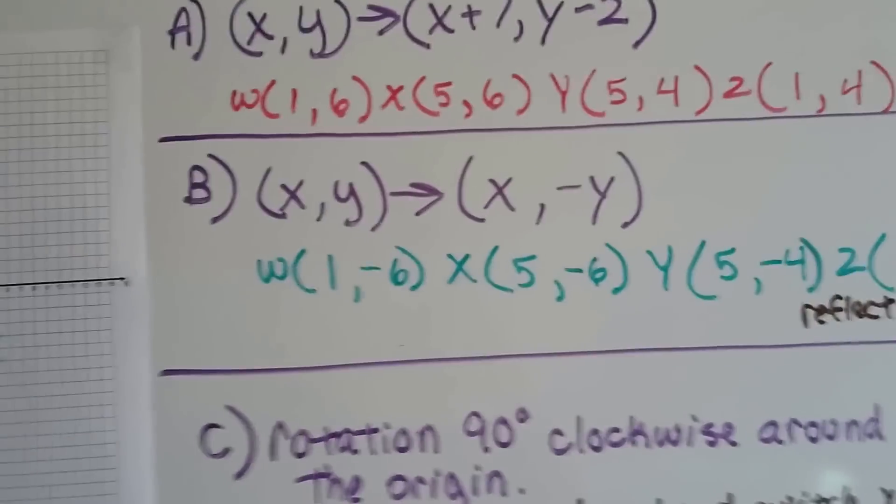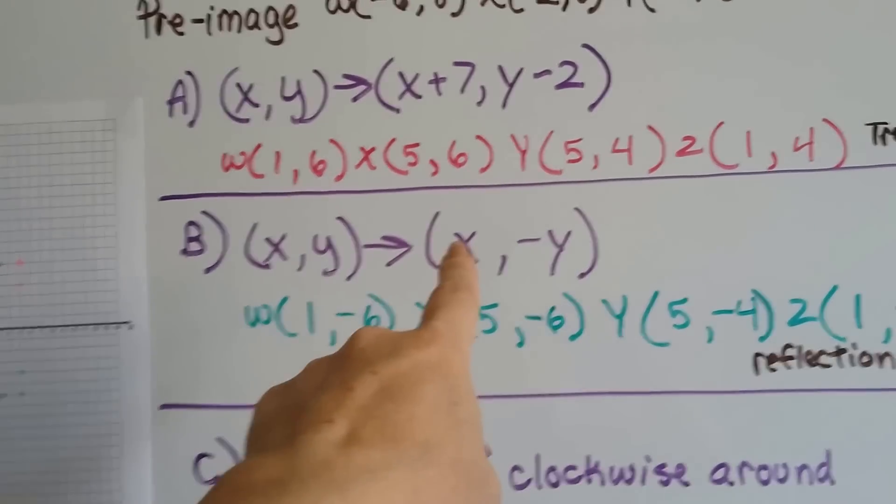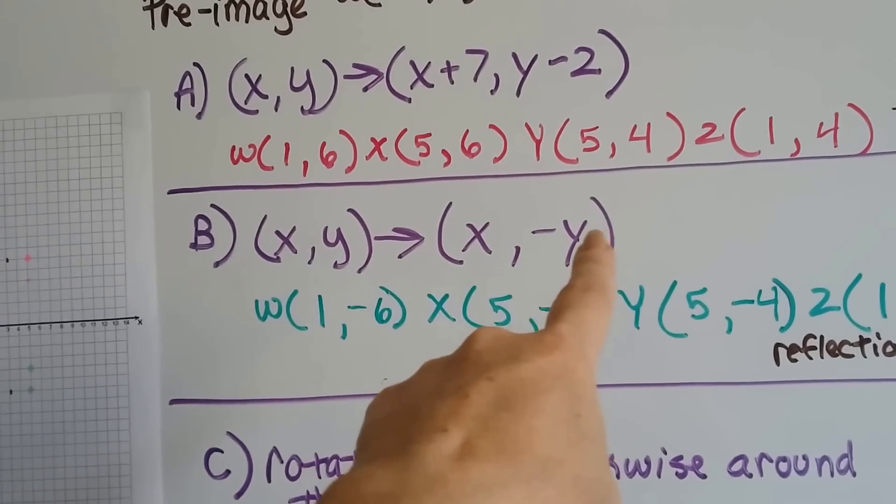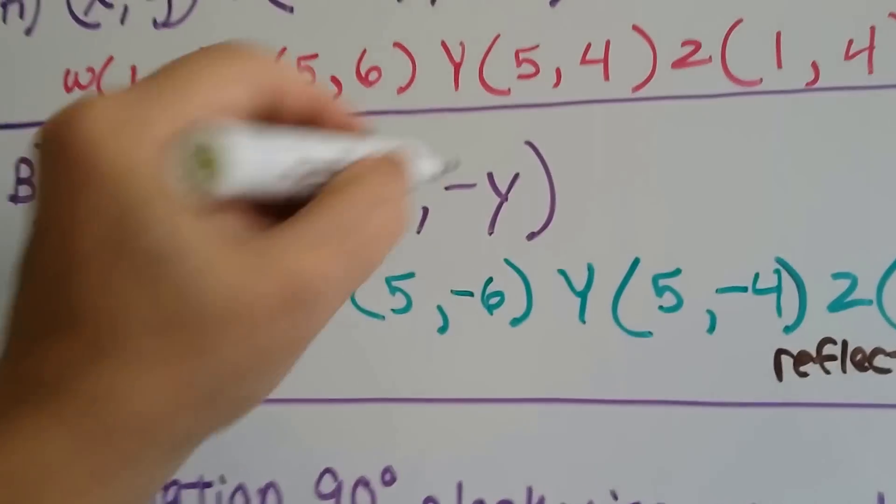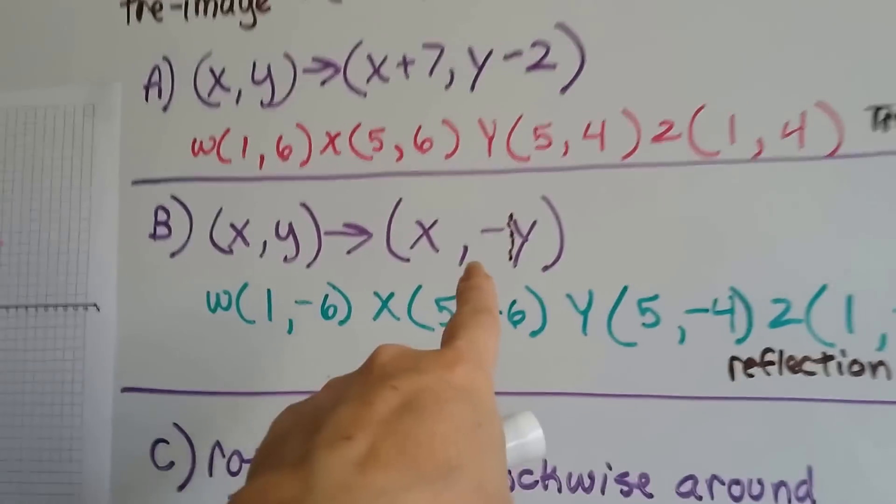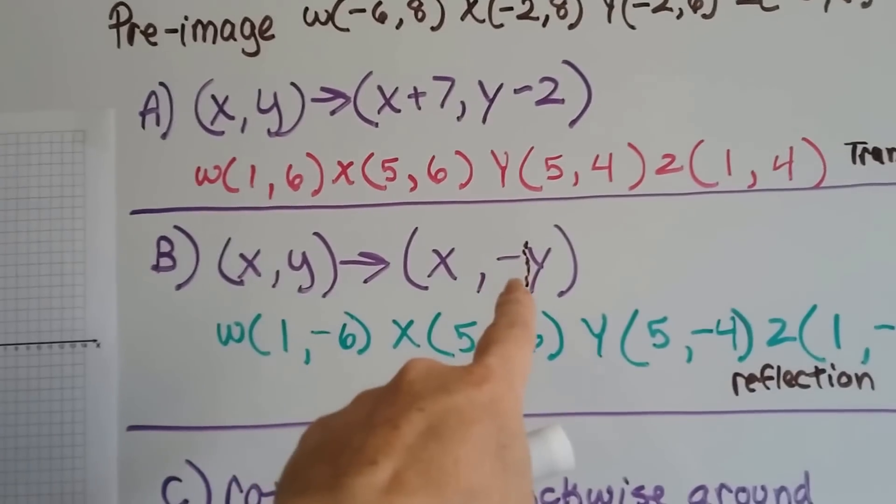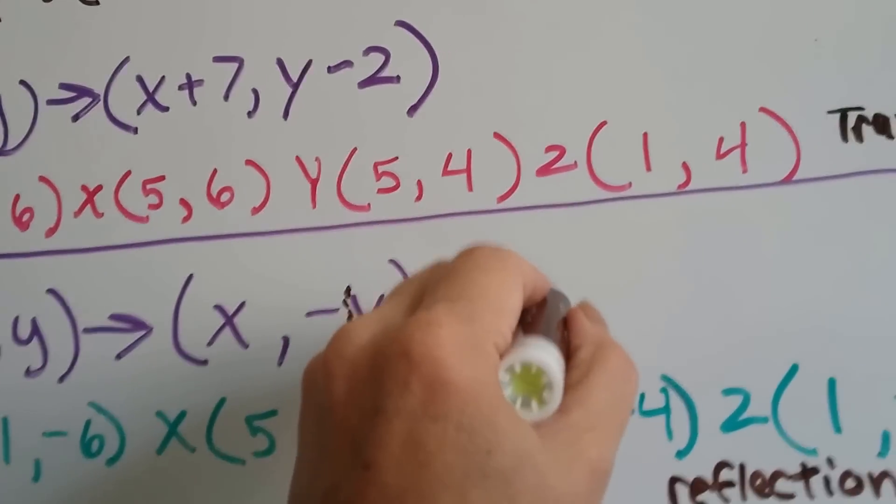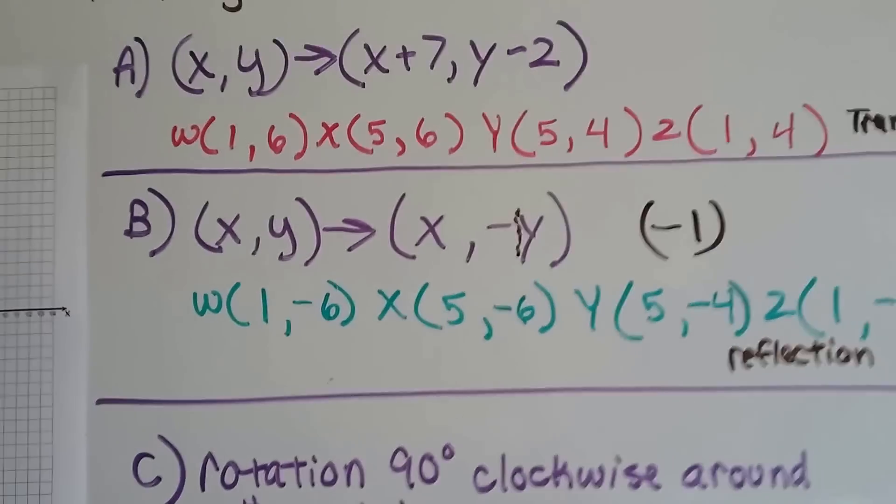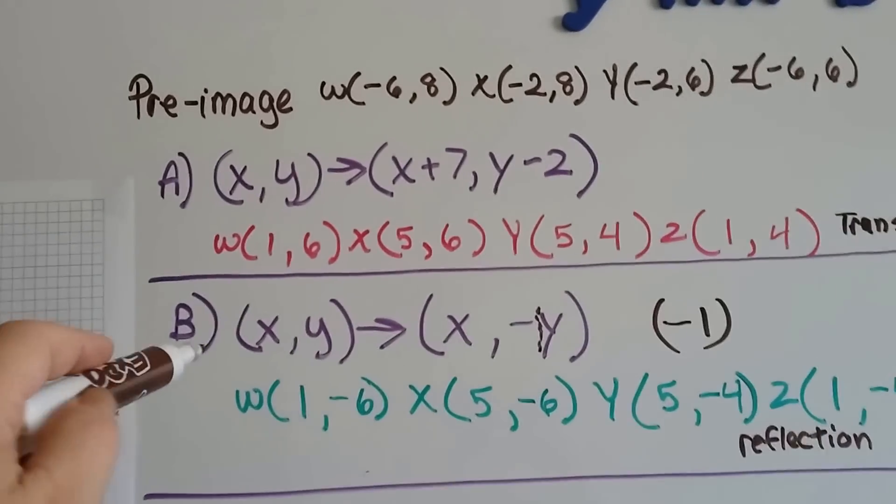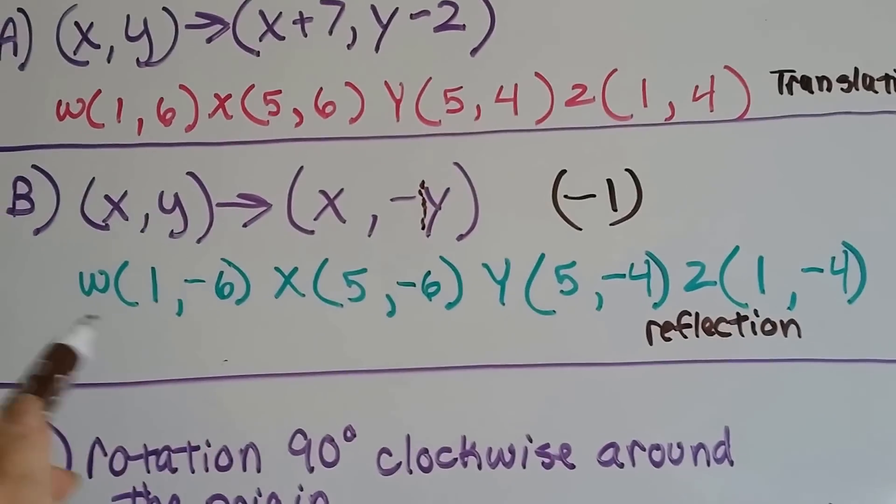Now for b, it just wants us to do a negative y. The x values are going to stay the same, but look, y is a negative y. Do you remember what happens when we have a negative y? Do you remember we've got our friend, the invisible one, hiding in here? That means we need to multiply all the y values by a negative 1. So they're all going to be multiplied by a negative 1. Just the y. So what we do is we take all the x values, 1, 5, 5, and 1, and drop them down into the new place.